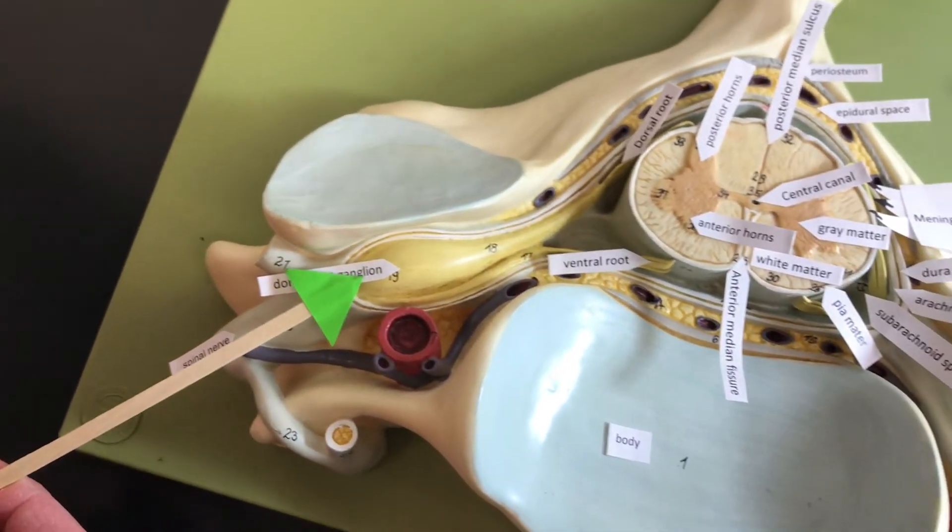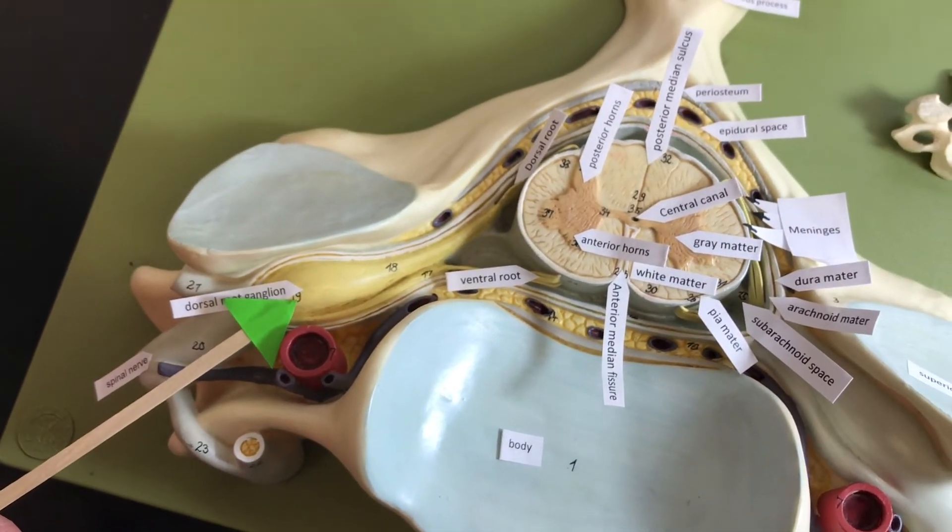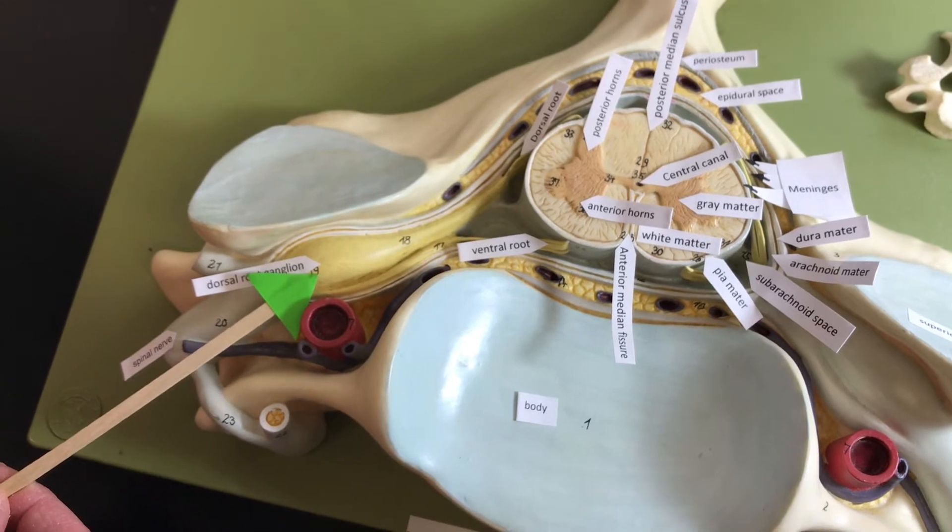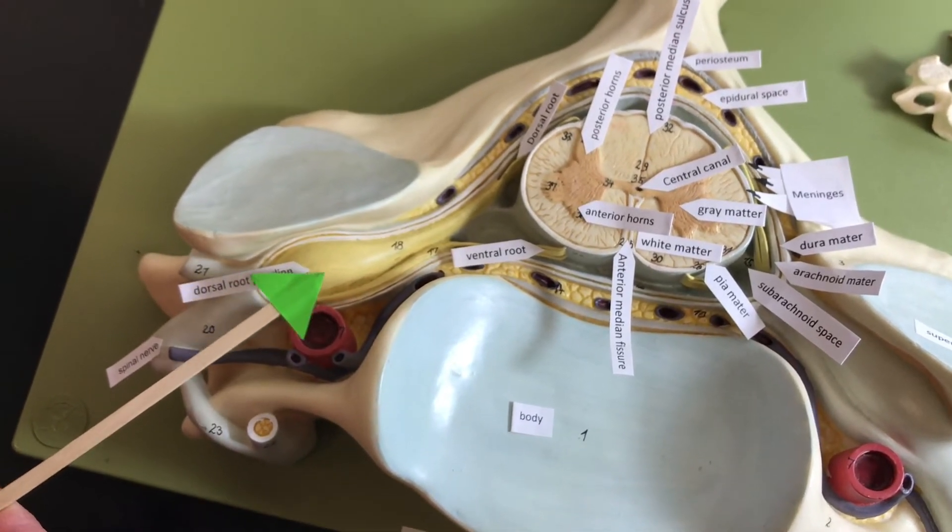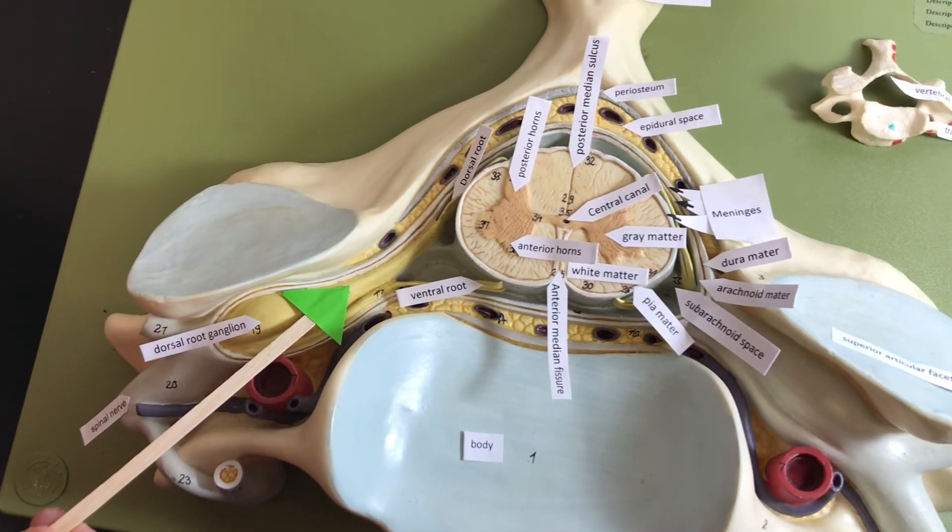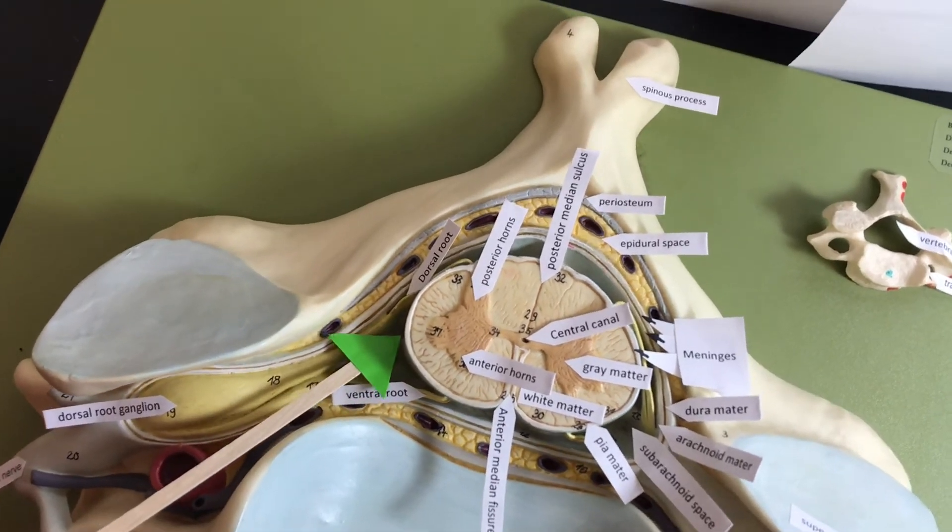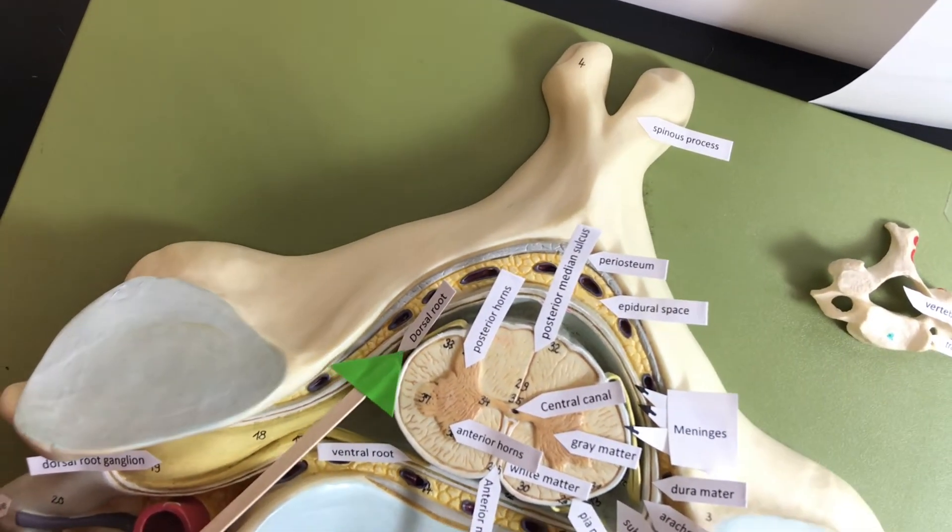The dorsal root ganglion or posterior root ganglion has the cell bodies of the sensory neurons. The axons of the sensory neurons are going to continue to the spinal cord through the dorsal root.